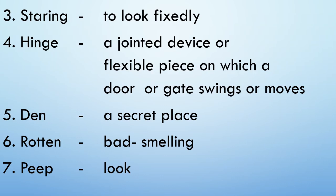The third word is staring. Staring means to look fixedly. The fourth word is hinge. Its meaning is a jointed device or flexible piece on which a door or gate swings or moves. The fifth word is den. Den means a secret place. The sixth word is rotten. Rotten means bad smelling. The seventh word is peep. Peep means look.